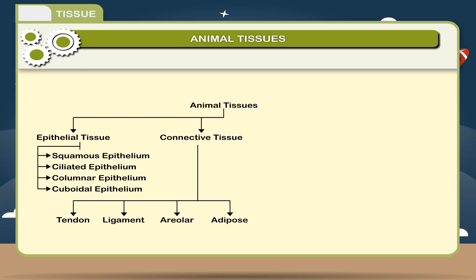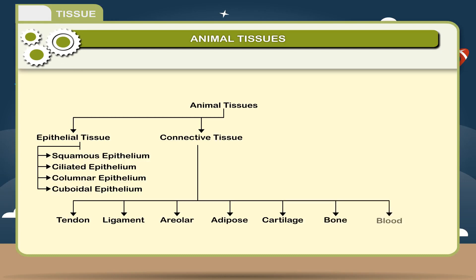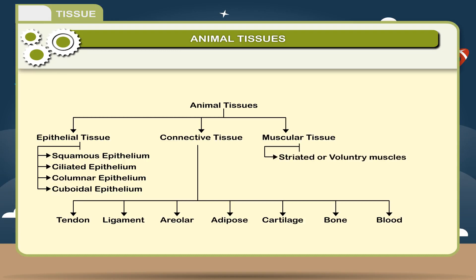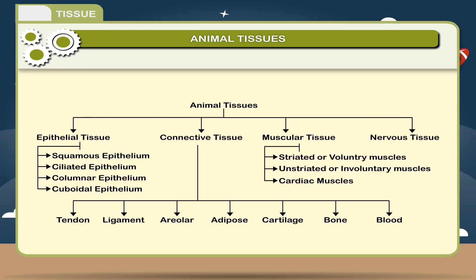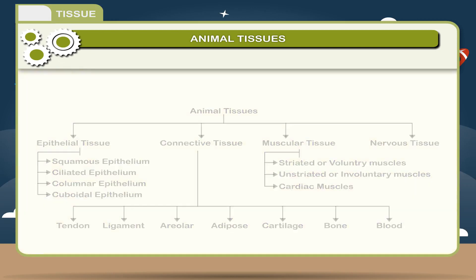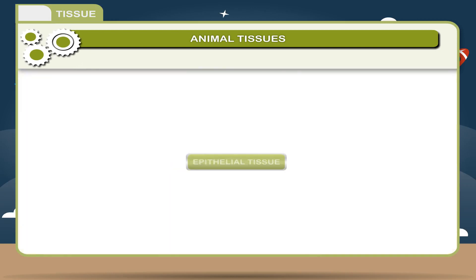Areolar, Adipose, Cartilage, Bone, Blood, Muscular tissue — which includes Striated or Voluntary muscles, Unstriated or Involuntary muscles, and Cardiac muscles — Nervous tissue, and Epithelial tissue.